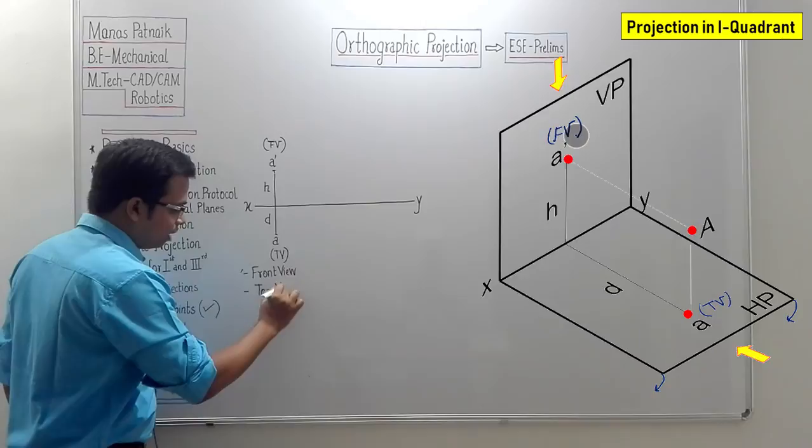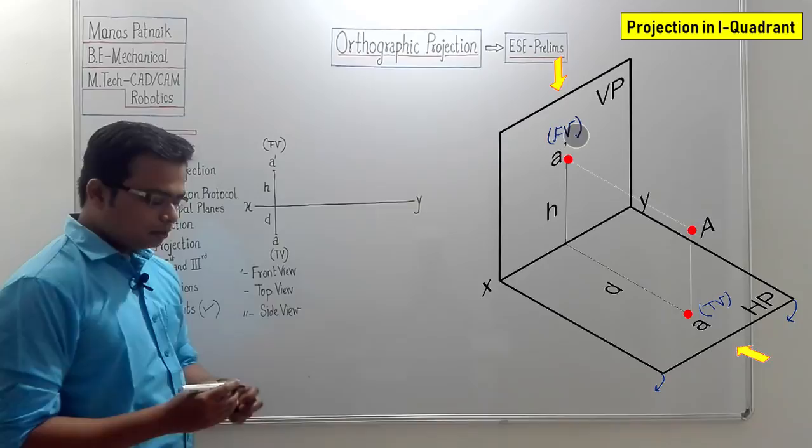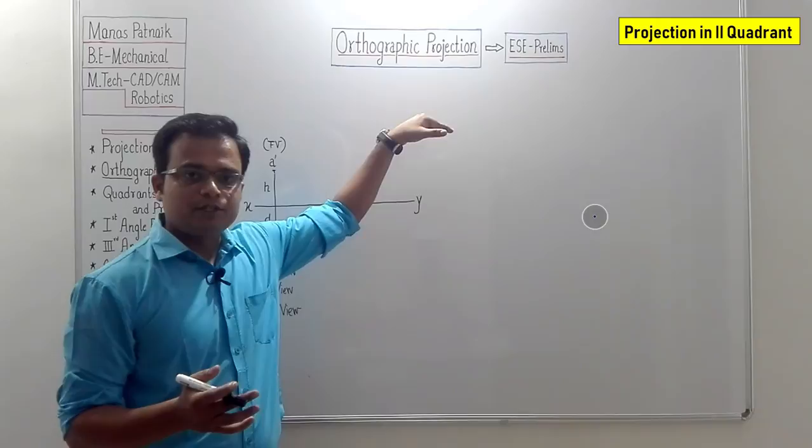If there is no dash, it is the top view. And one more thing: if there is a double dash, that means a side view — either a left-hand side view or a right-hand side view. This was all about projection of a point in the first quadrant.